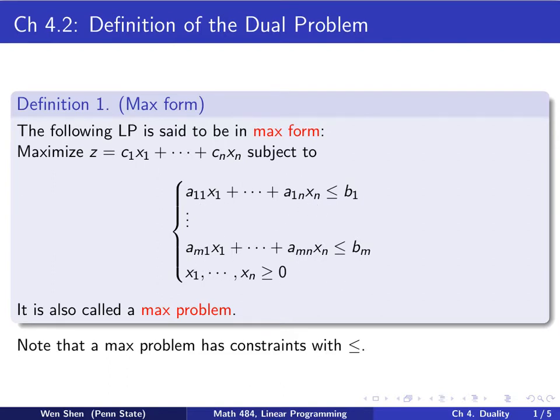Here n is the number of variables, m is the number of constraints, and it's a linear relation. I want to call the attention that for this max problem, the constraints are less than equal sign.